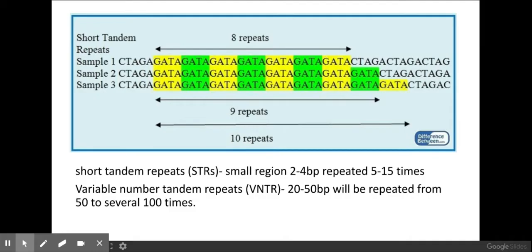So as you can see in this particular image here I've got GATA that's been repeated eight times. In my sample two I've got GATA has been replicated nine times within the genome, and in the bottom sample, sample three, I have this GATA, this short tandem repeat has been repeated 10 times. Now a short tandem repeat is a small region of DNA between two to four base pairs that can be repeated between five to 15 times.